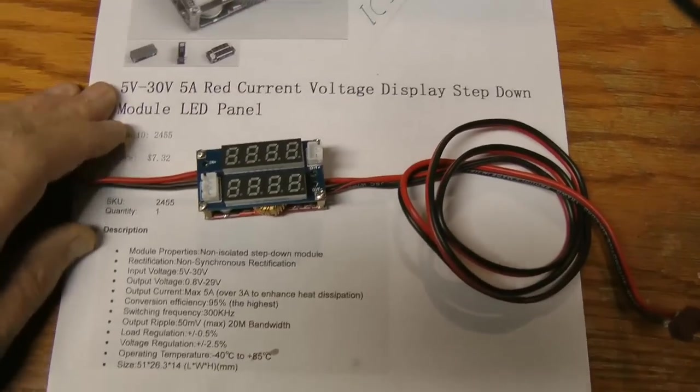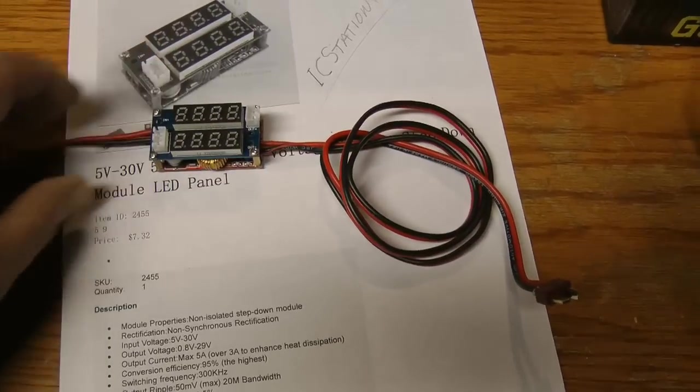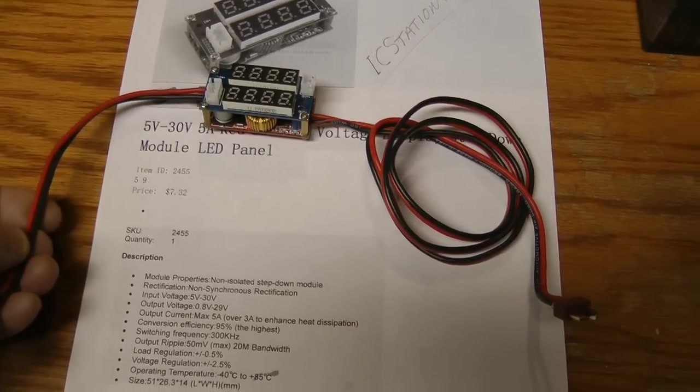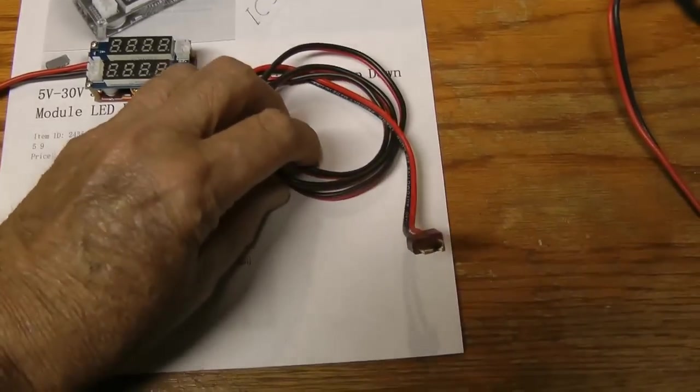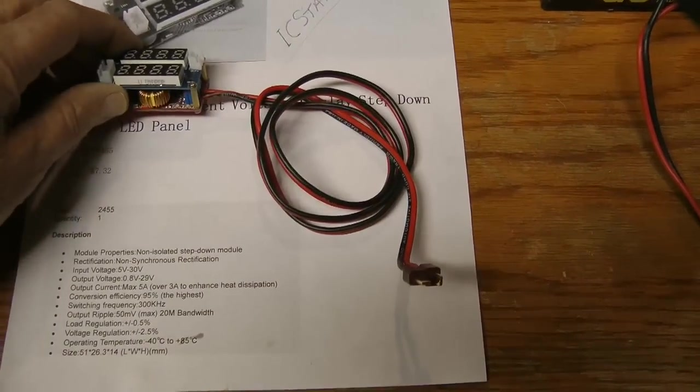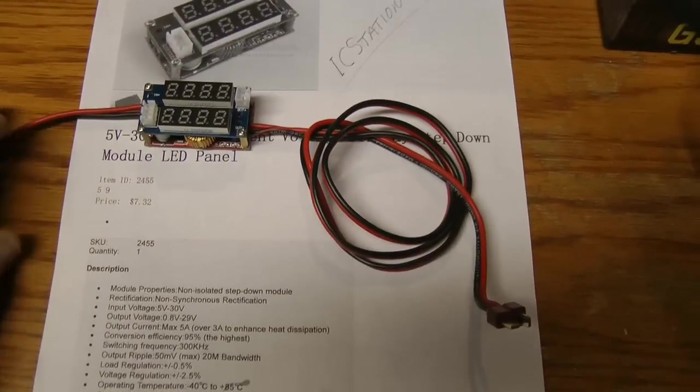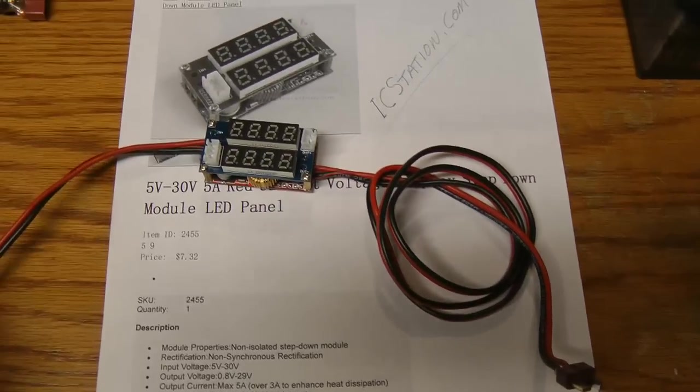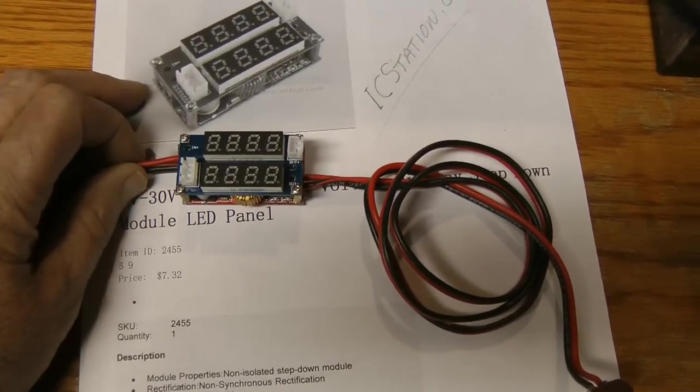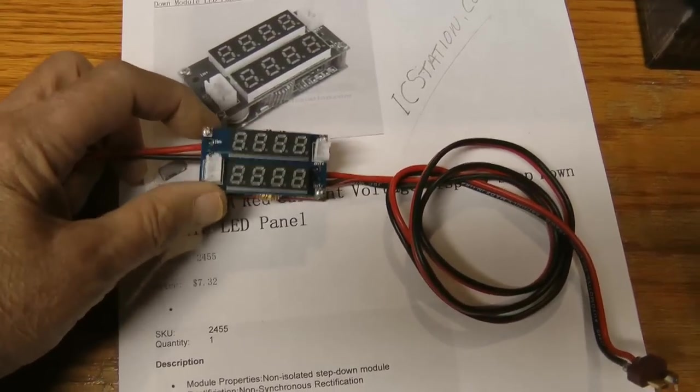This is only seven dollars and some change with free shipping from IC station. This one's inexpensive enough that you could probably use several of them and have them all set up and ready with the proper plugs. This thing will also run as a power supply the same way as the other one with current limiting. I'm going to set this camera up so I can use two hands and we'll take a look at how this thing operates.